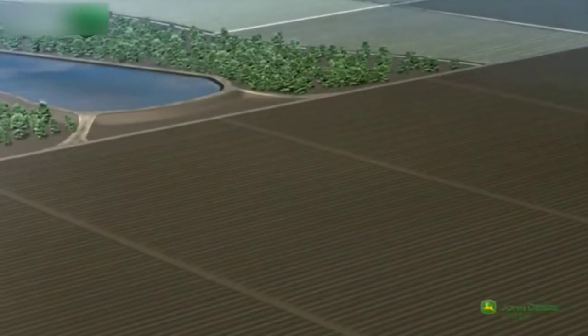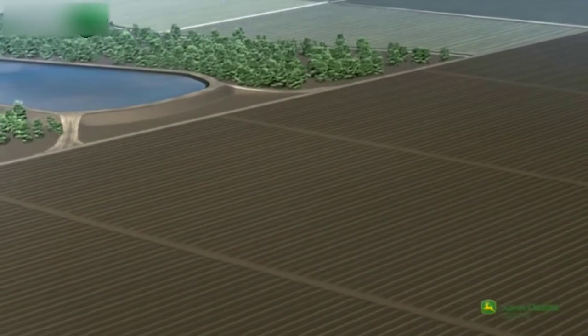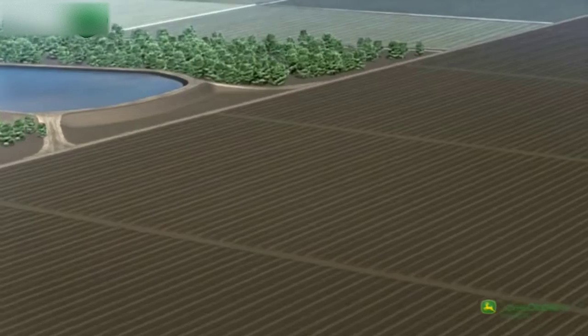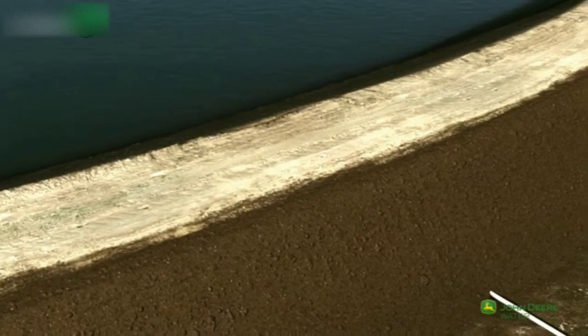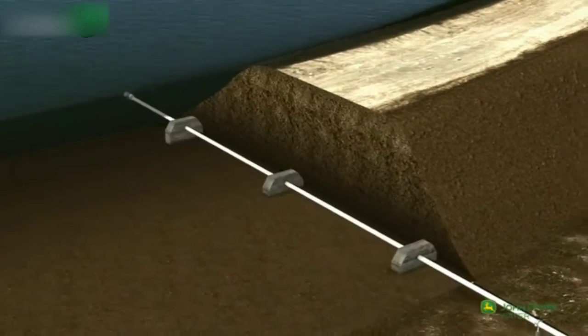John Deere offers a wide range of advanced tailor-made irrigation solutions to growers around the world. Every irrigation system begins with a water source.